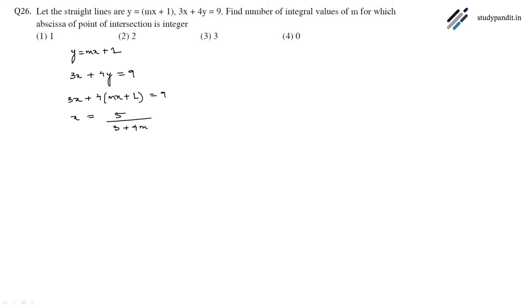It is given the abscissa of the point of intersection is integer. So 3 plus 4m can take values plus or minus 1 or plus or minus 5.